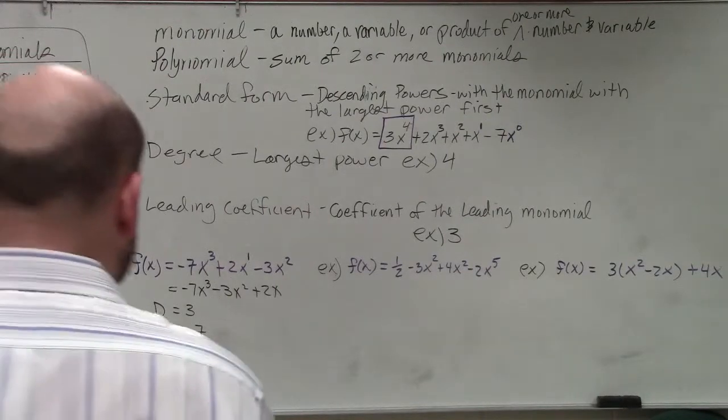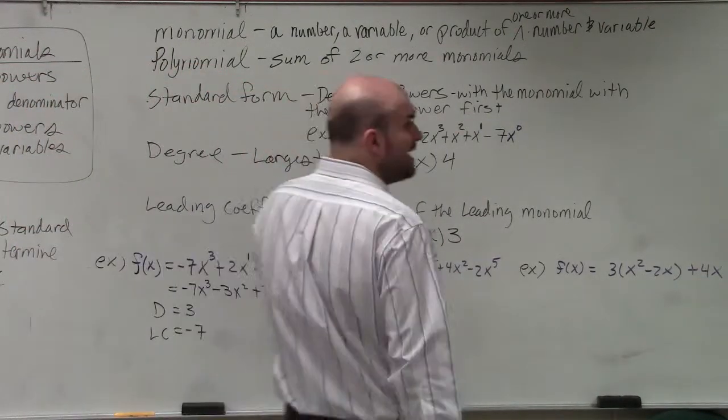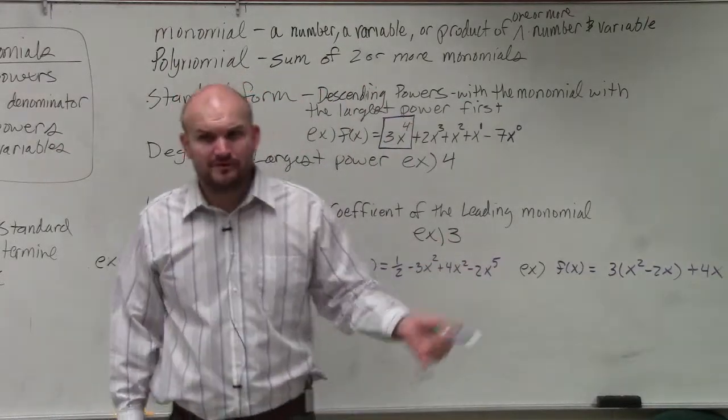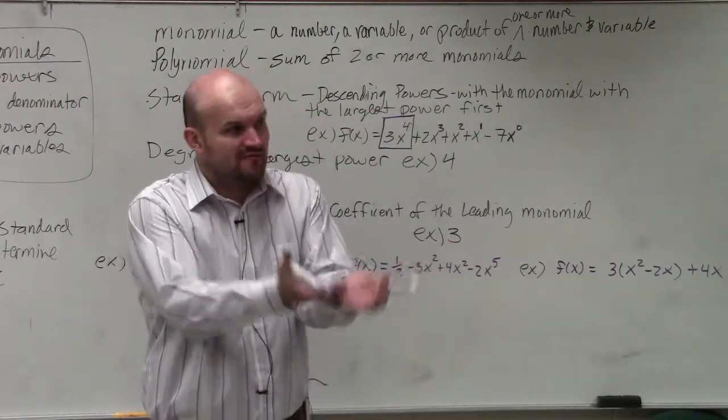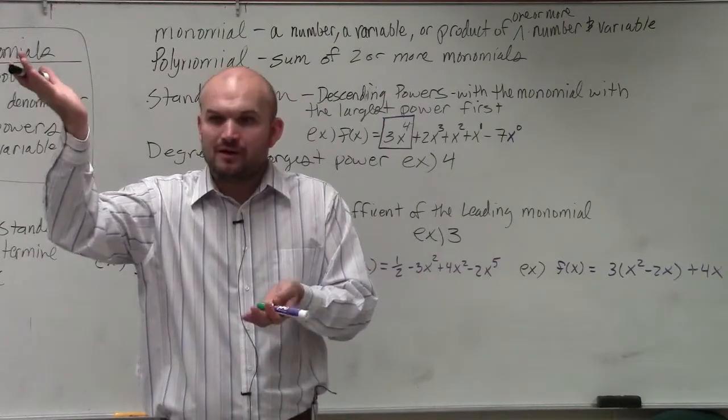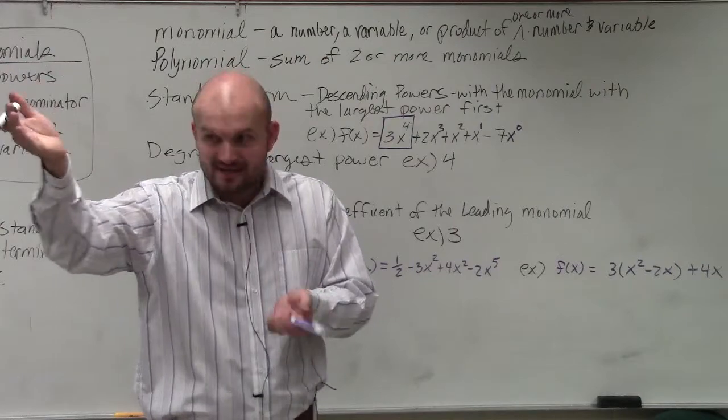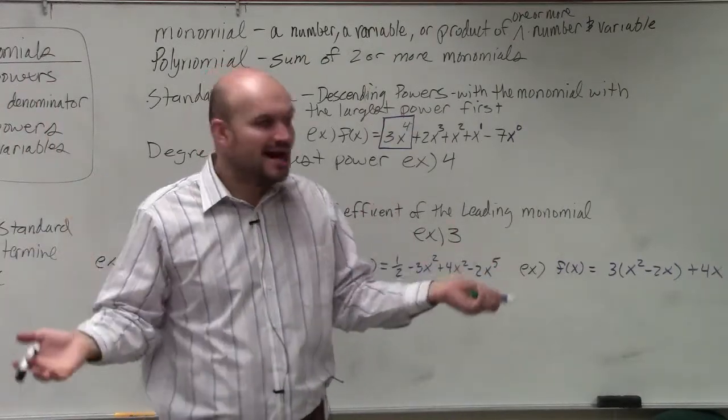The reason why it could be confusing for a lot of students is because now we have two monomials that have the same degree. Well, hopefully, if you guys remember, if you have two monomials that have the same variable and the same power, those are what we call like terms. And like terms, we can do what? Combine.